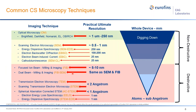This chart shows common microscopy techniques we use for these analyses, using the concept of digging down. At the top, we use optical techniques for larger fields of view, then progressively use electron microscopy and focused ion beam to get down to atoms or sub-angstrom resolutions. Optical gives about a quarter-micron spatial resolution, SEM can get down to a nanometer, and spherical aberration-corrected scanning transmission electron microscopy (AC STEM) gets us to the sub-angstrom regime.